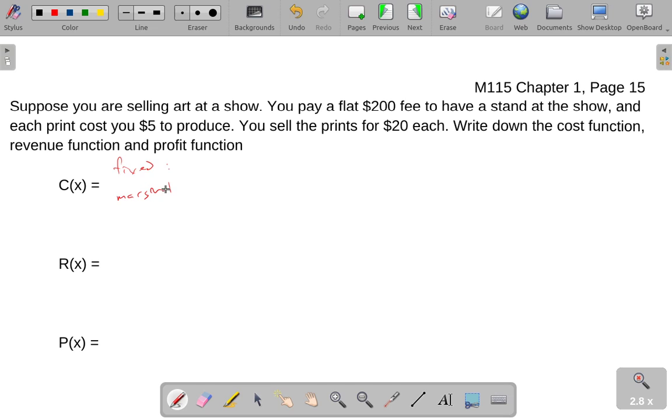Our fixed cost is money going out that doesn't depend on how many prints we end up selling. There's a flat $200 fee to have a stand at the show. So that is your fixed cost, just $200. You pay that and you can sell as much or as little.